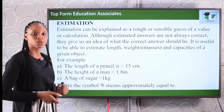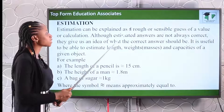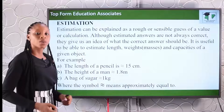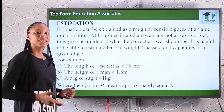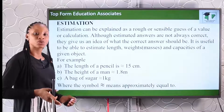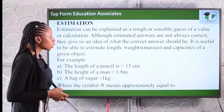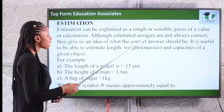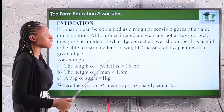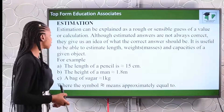What is estimation? Estimation can be explained as a rough or sensible guess of a value or calculation. When we talk about estimation, we mean a rough calculation of an answer. It is not always accurate, but it gives us an idea of what the answer is. Although estimated answers are not always correct, they give us an idea of what the correct answer should be, or an answer that is close to the correct answer.